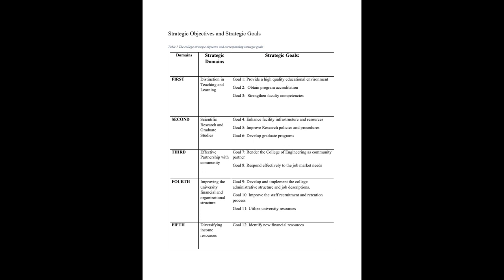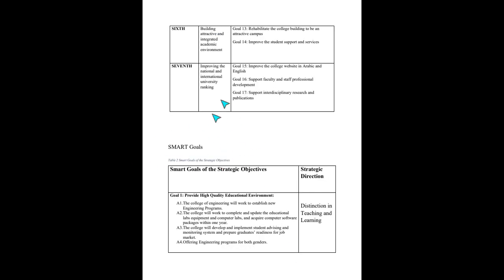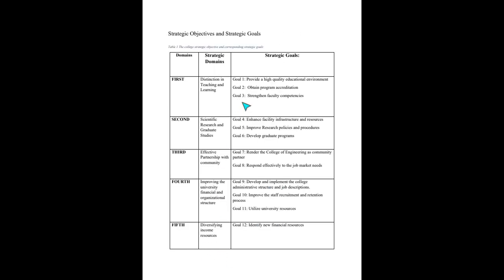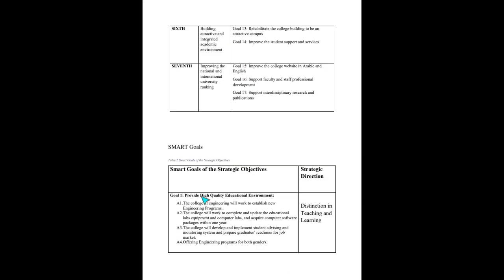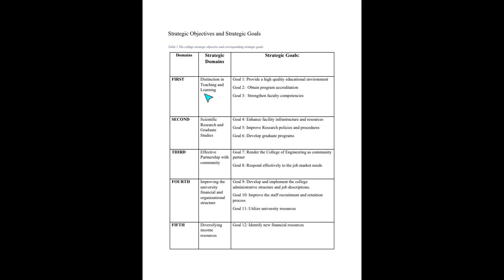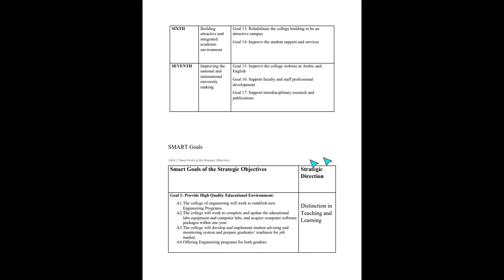Moving from strategic goals to SMART goals — SMART goals are more specific compared to the broad strategic goals. They have the characteristics of SMART: Specific, Measurable, Applicable, Realistic, and Timeframe. For example, 'provide high quality educational environment' is the strategic goal from the 'Distinction in Teaching and Learning' domain. This is the strategic domain, then you have the strategic goals, and then you have the SMART goals derived from them.